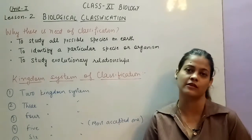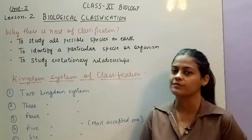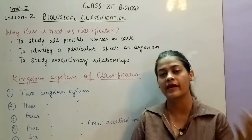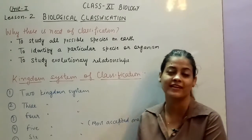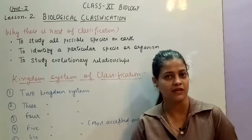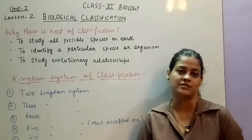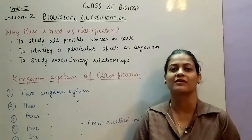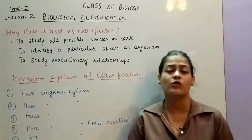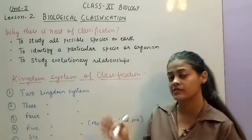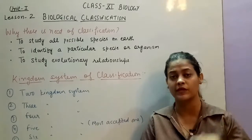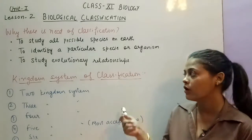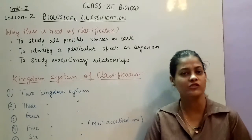So classification enables the easy study of organisms. The second reason is to study the evolutionary relationship, which is also very important. What is happening in the school? If you are in sixth class, you will go directly to the sixth class, but first you will cross the nursery, KG1, 2nd, 3rd — this represents the evolutionary relationship. When we do classification, we organize organisms in a particular sequence.